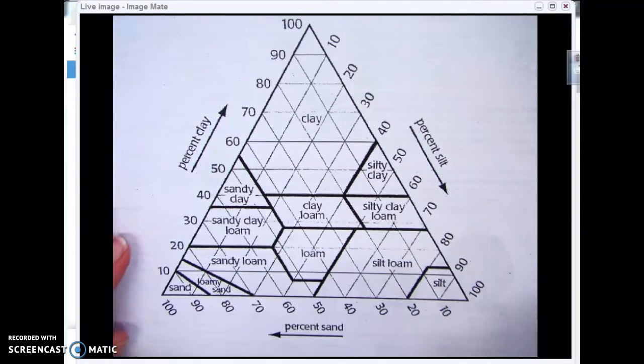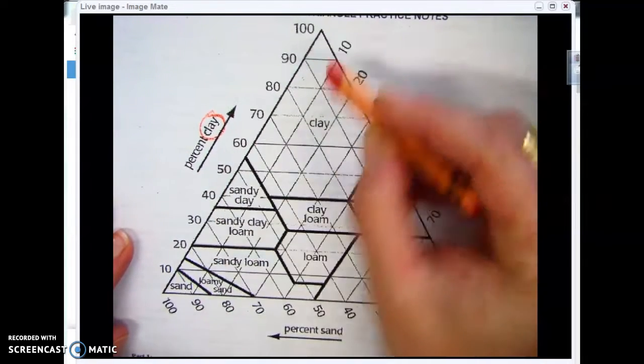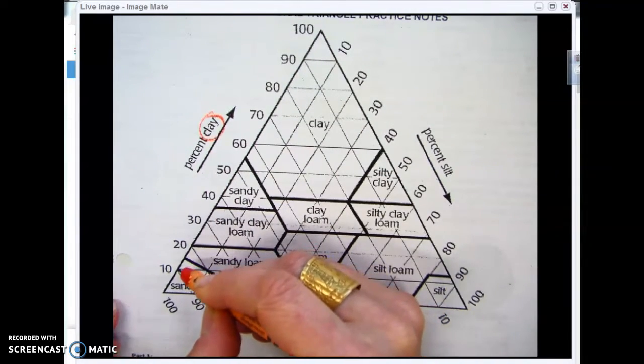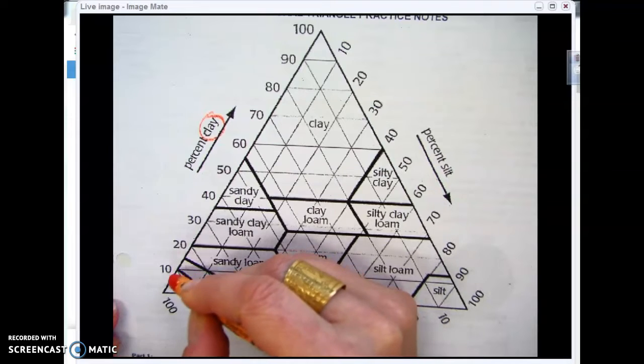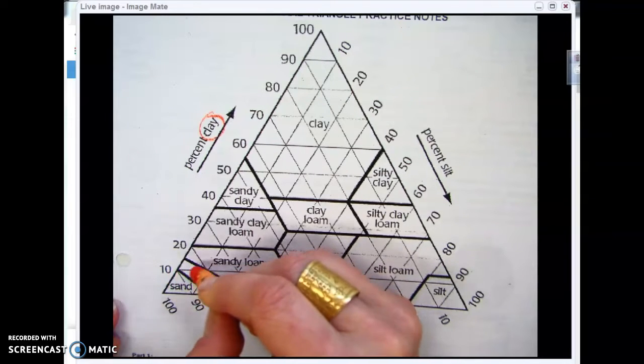All of the percent clays are going to be on this axis. It is important with your soil triangle that you pay careful attention to the angle that the number is on, because that angle is going to correspond with the line.